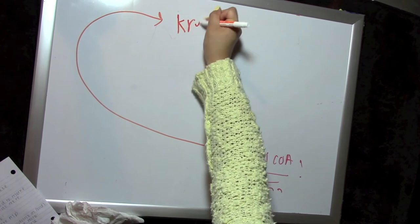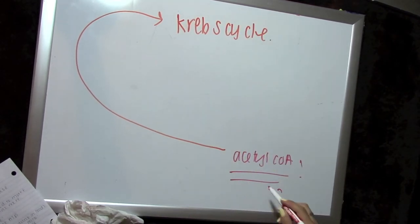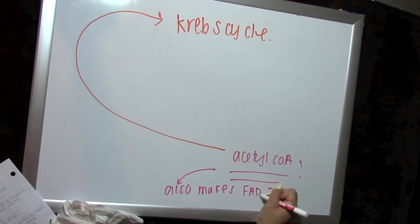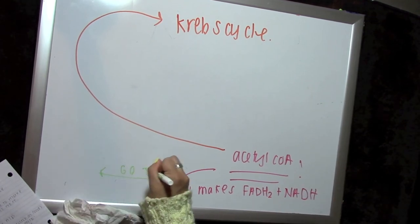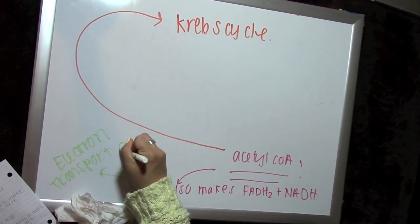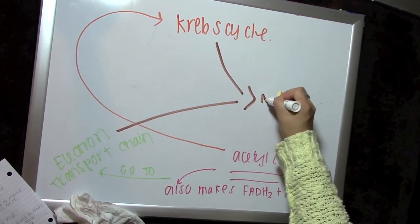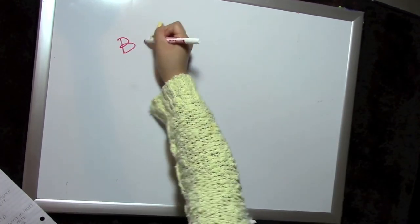Now if you guys remember from the earlier sections of this video, acetyl-CoA goes through the Krebs cycle in order to make a little bit of ATP and electron carriers, and then those electron carriers are put into electron transport chain and make a lot more ATP.